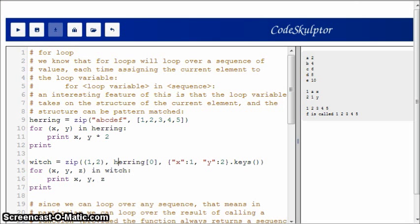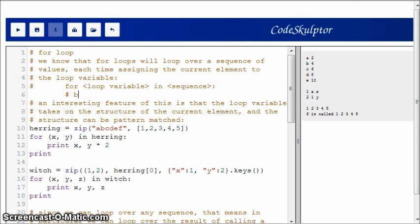For loops, we know that for loops will loop over a sequence of values, each time assigning the current element to the loop variable. The general structure is this: we have the keyword for, then we have loop variable, then we have in, then we have some sequence, then colon, and then the body of the loop.